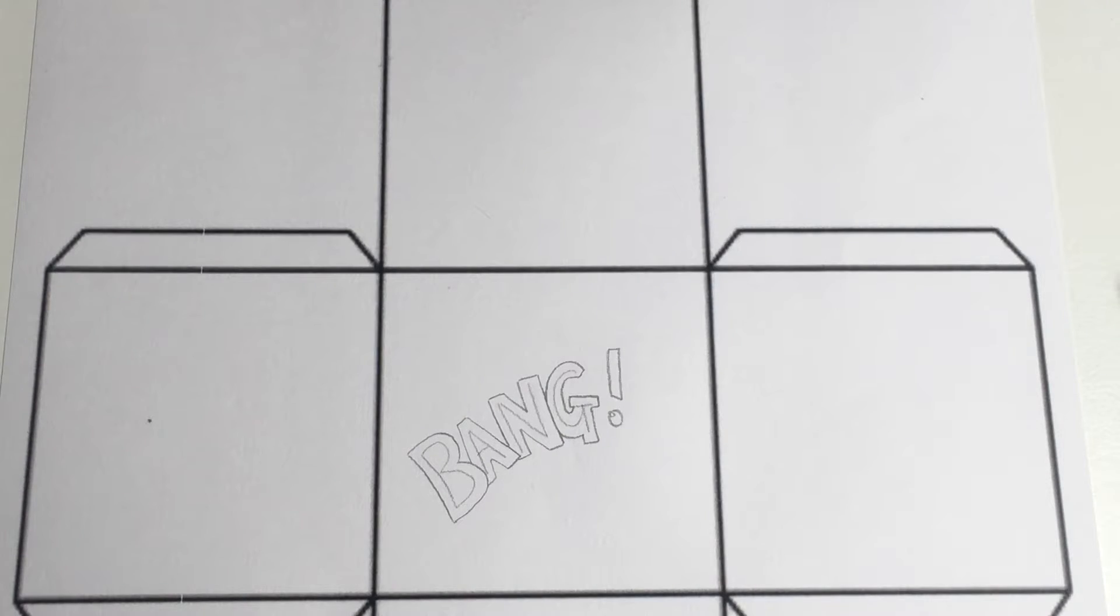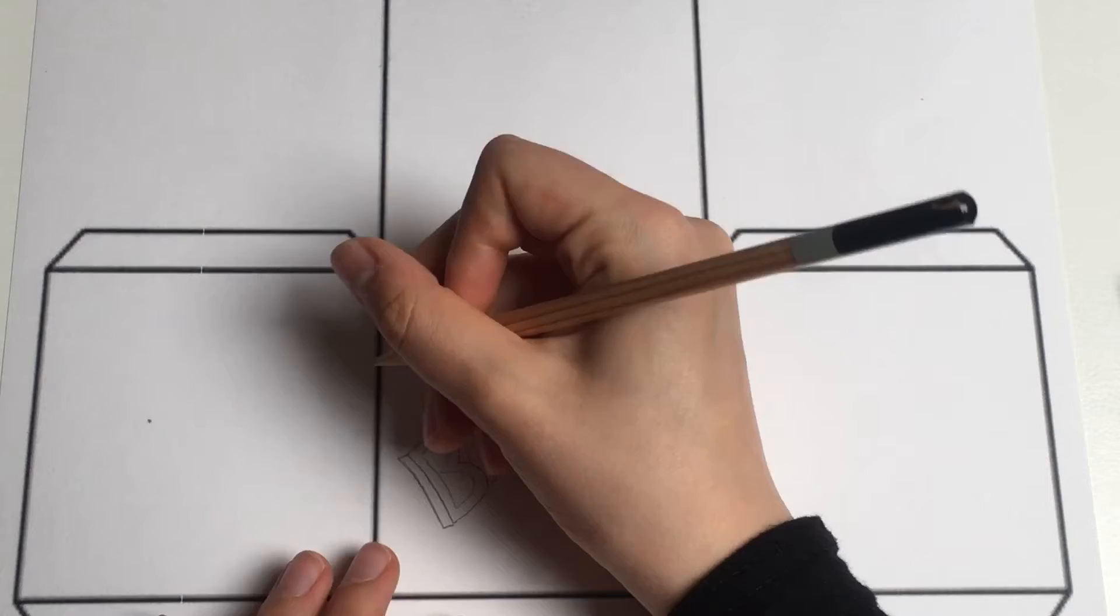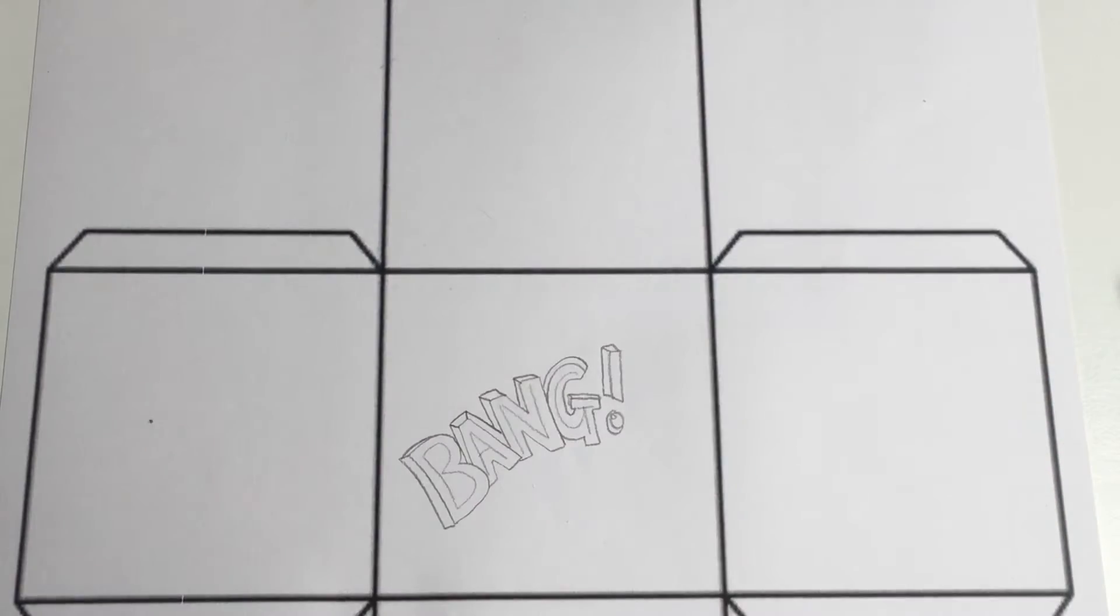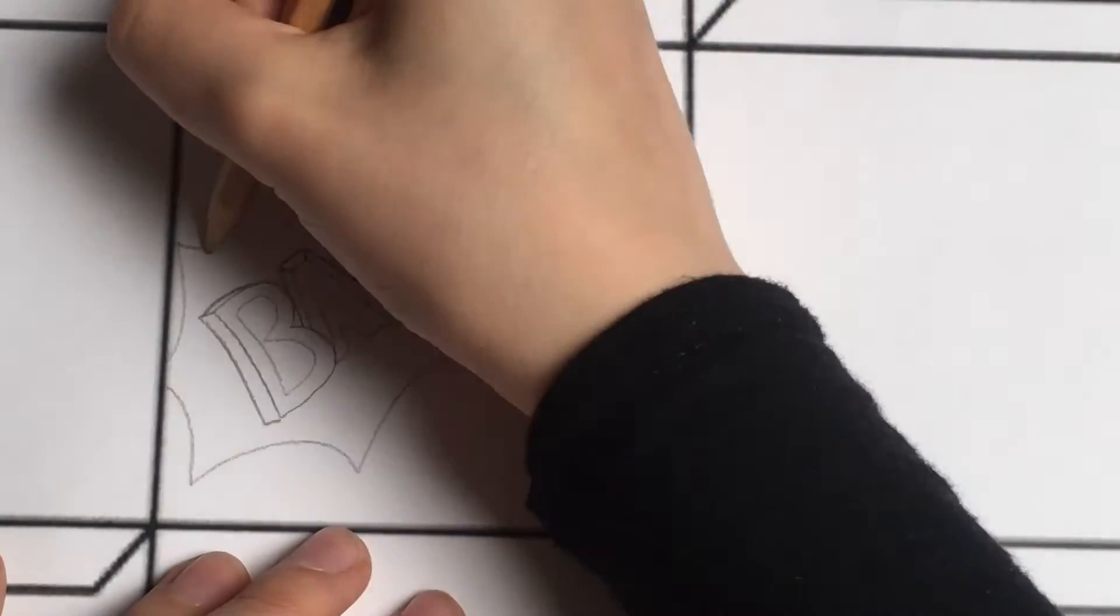Once I've done that, I'm going to add some lines which are going to be my shadow, and I'm going to then add an explosion around it.